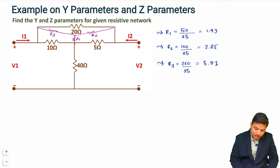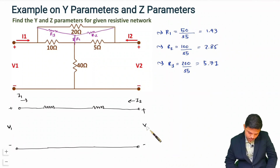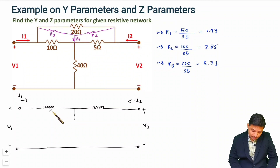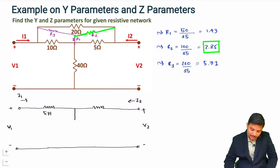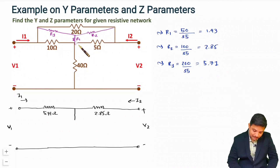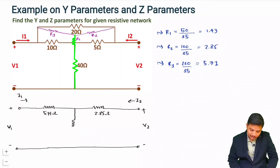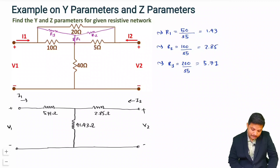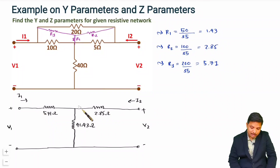Now I will redraw the network in terms of this star network. R3 = 5.71 Ω is connected here, R2 = 2.85 Ω is connected here, and R1 = 1.43 Ω is in series with 40 Ω, giving 41.43 Ω. So now we have a simple T connection.